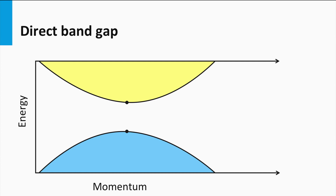In contrast, a direct bandgap has the highest point of the valence band vertically aligned with the lowest point of the conduction band in energy-momentum space. This means that exciting an electron from the valence to the conduction band requires only the energy provided by a photon, without any additional momentum transfer. Therefore, the excitation of an electron by photon absorption is more likely to happen for direct bandgap materials, and the absorption coefficient for direct bandgap materials is significantly higher than for indirect bandgap materials.